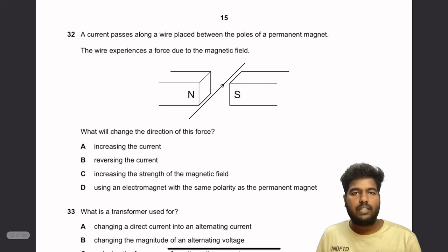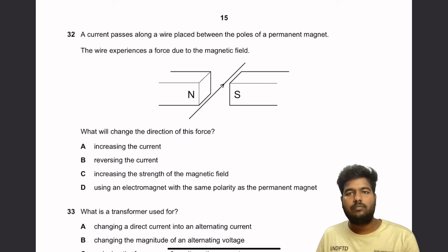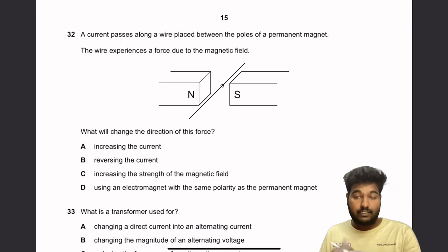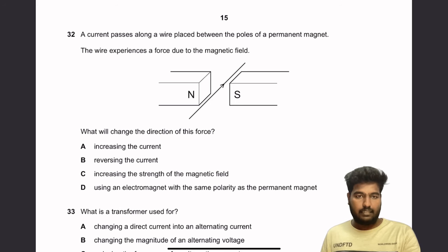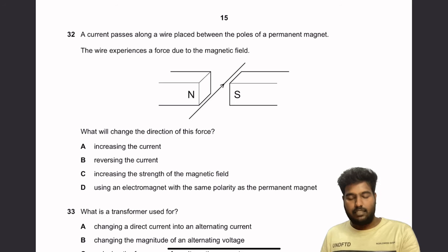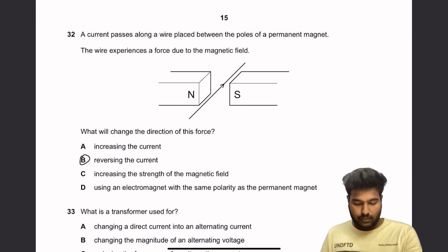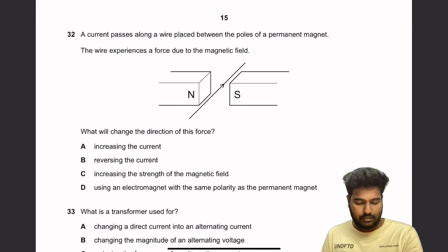Question 32: A current passes along a wire placed between poles of a permanent magnet. The wire experiences a force. What will change the direction of this force? Increasing the current changes only the magnitude. Reversing the current reverses the direction of the force. Increasing magnetic field strength only increases magnitude. Using an electromagnet with the same polarity doesn't change direction. So B — reversing the current — is the right answer.